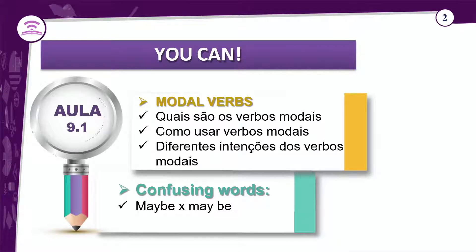Os verbos modais são vários verbos com extensões diferentes. Alguns podem ser similares nas intenções. Os verbos modais são a categoria de verbos mais fáceis porque realmente não têm flexão verbal. Você usa o verbo na forma natural — ele não muda para nenhum pronome pessoal, e o verbo principal que o acompanha também não muda.